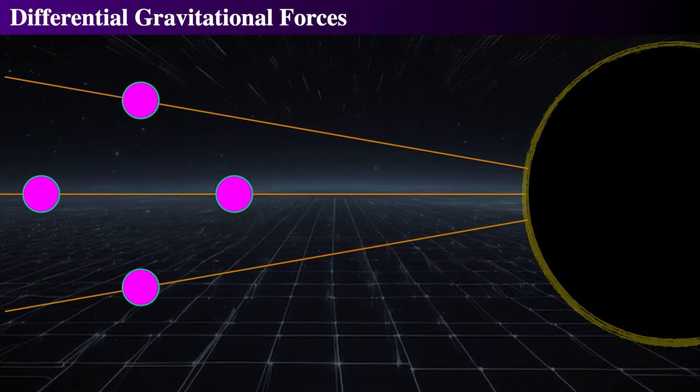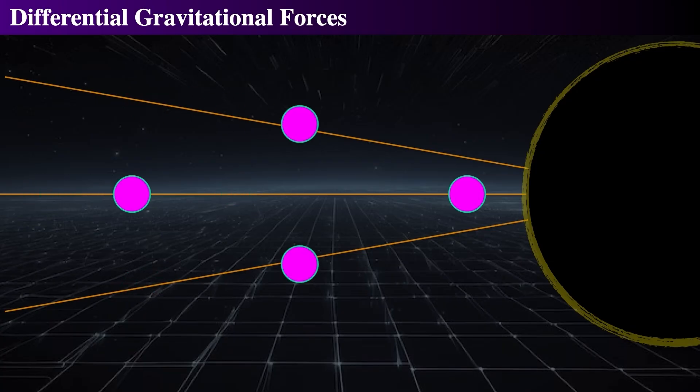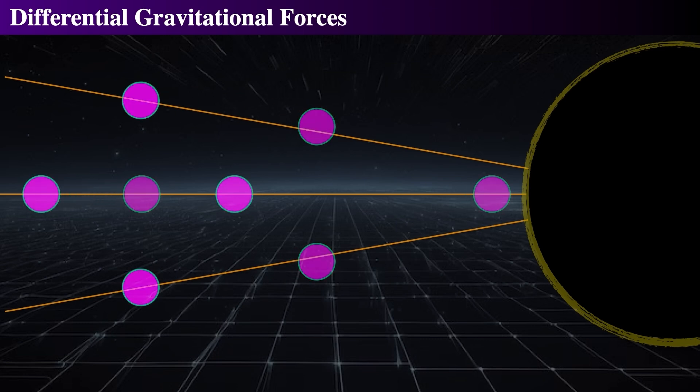Let's say we have four balls in free fall toward a black hole. We see how the far one doesn't fall too much, but the near one does, and the other two start to converge in the middle. This is the essence of spaghettification.